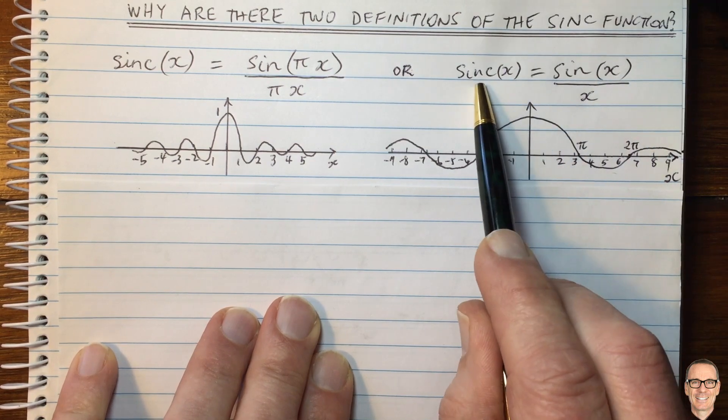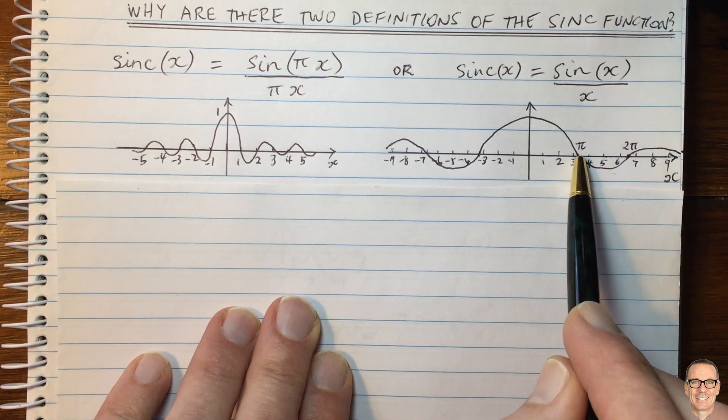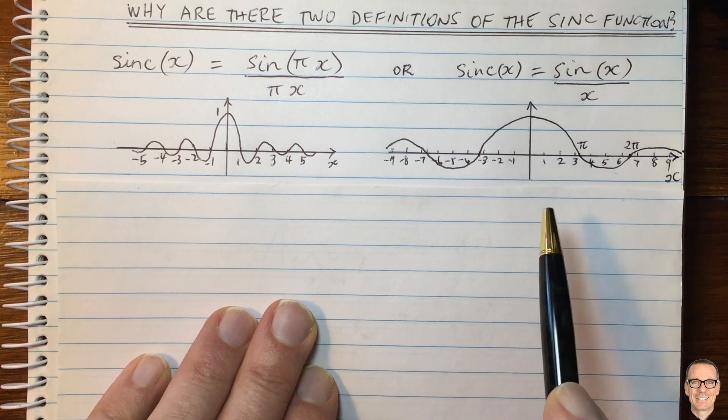Whereas for this definition of sinc, the crossings occur at pi, 2pi, 3pi, and so on.